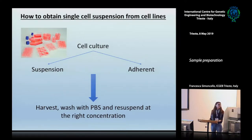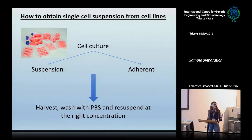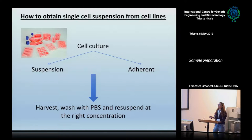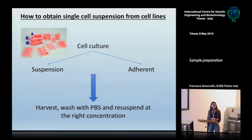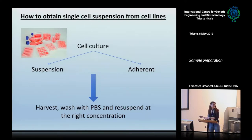If your starting sample is a cell culture, you are in the easiest situation. You just have to harvest your cells. Of course, if the cells grow in adhesion, you may add some EDTA or you can use trypsin in order to detach them. After the harvesting, you just have to wash your cells with a physiological solution in order to remove all contaminating proteins and debris. Then you re-suspend the cells at the right concentration and you are ready to obtain a single cell suspension and label the cells with specific antibodies.